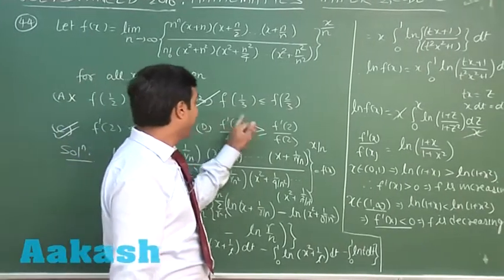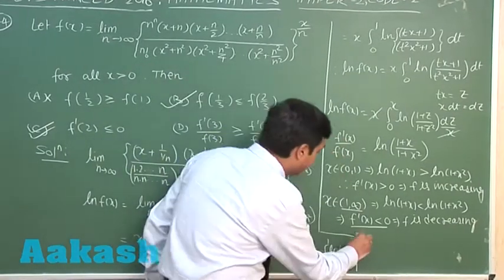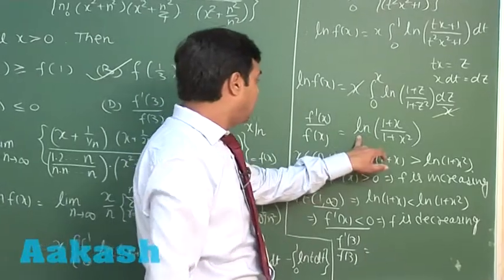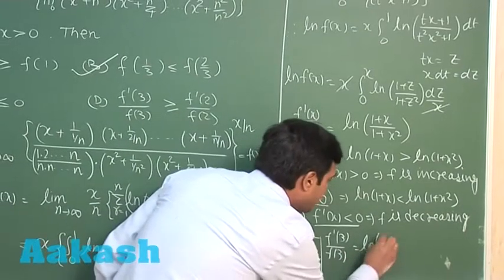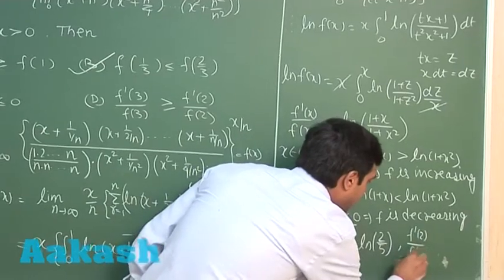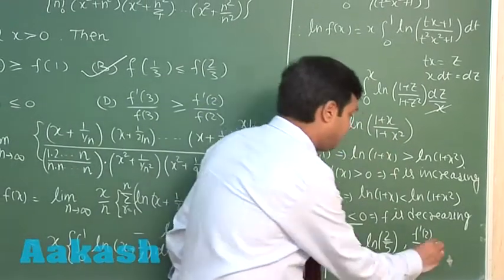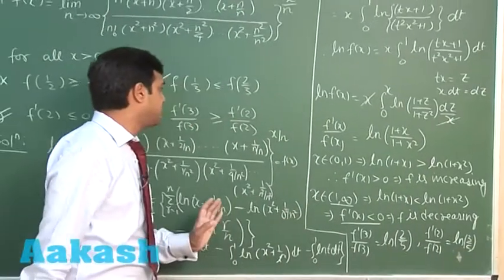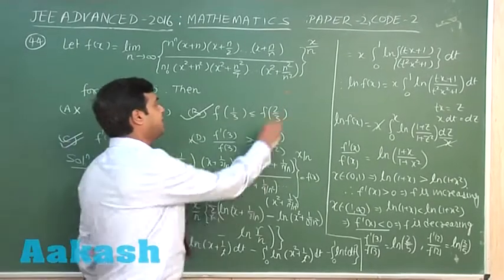For option D, we compare f'(3)/f(3) and f'(2)/f(2). From the formula: f'(3)/f(3) = log(4/10) = log(2/5), and f'(2)/f(2) = log(3/5). Since log(3/5) > log(2/5), the second term is greater than the first, so option D is not correct. Therefore, from the four options, B and C are the correct answers.